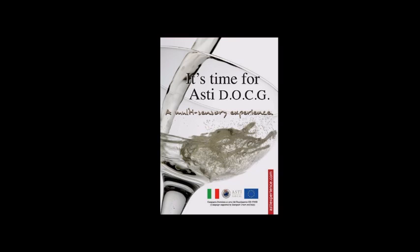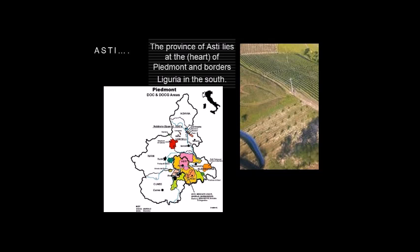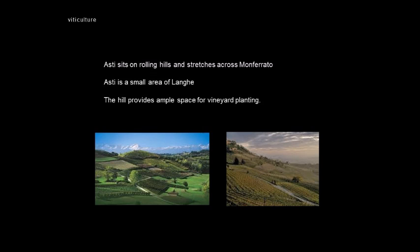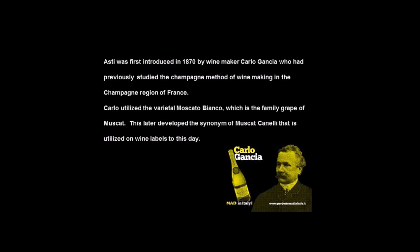Viticulture of Rioja: Rioja Alta has shorter growing seasons, resulting in less ripe fruit and lighter body. Alavesa is similar to Alta but wines have fuller body and higher acidity with lower density planting on poor soil. Rioja Baja: wines are deeply colored with high alcohol — vines are spaced far apart as drought is a problem.